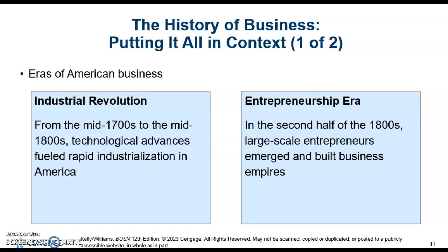The way it changed lifestyles is we started having factories pop up. Instead of a country-type lifestyle, there started to be more of an urban lifestyle. People started living closer to the factories so they could get to work. That was in the mid-1700s to 1800s.